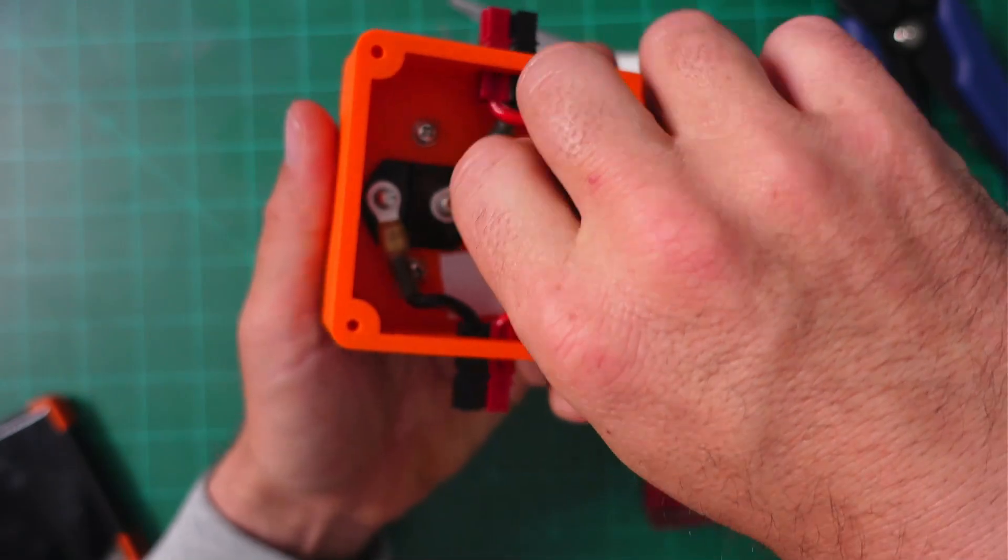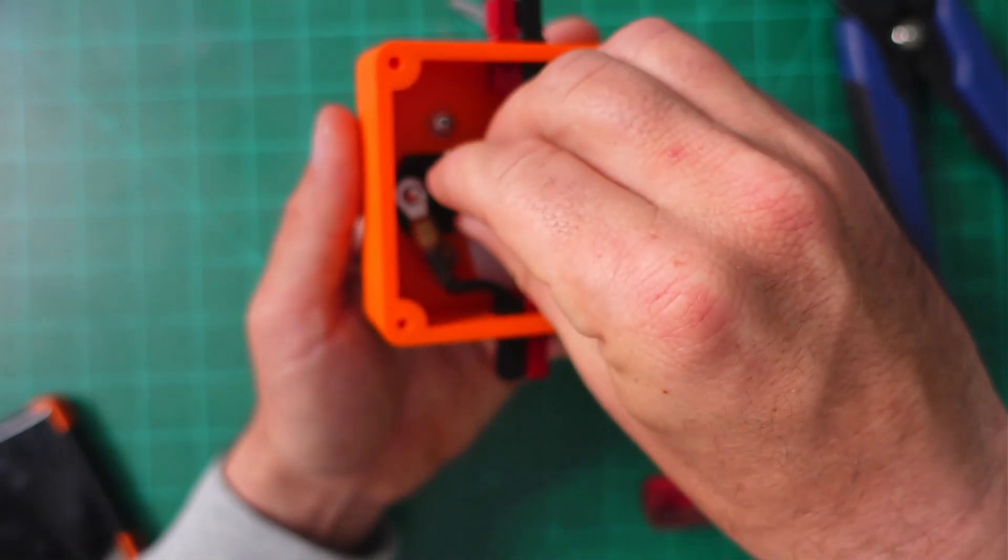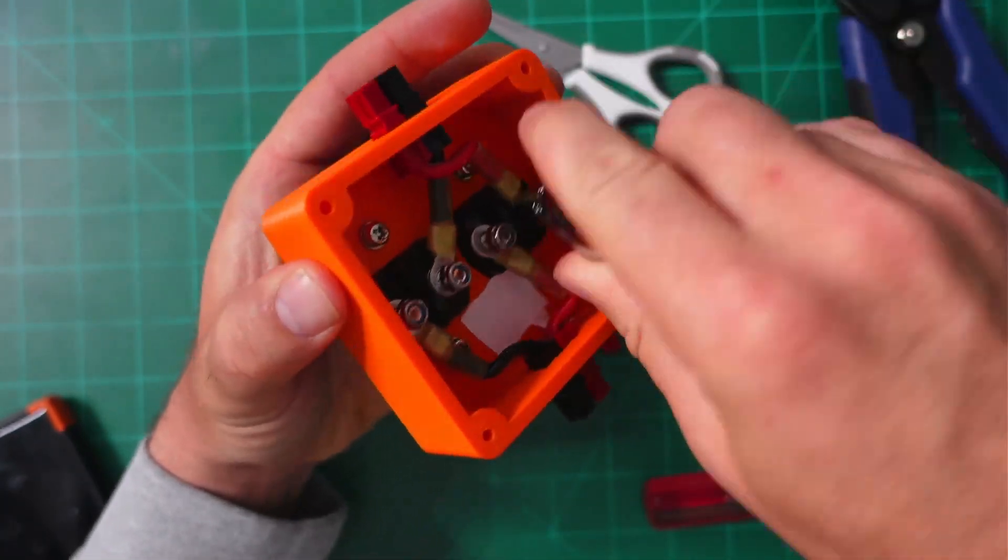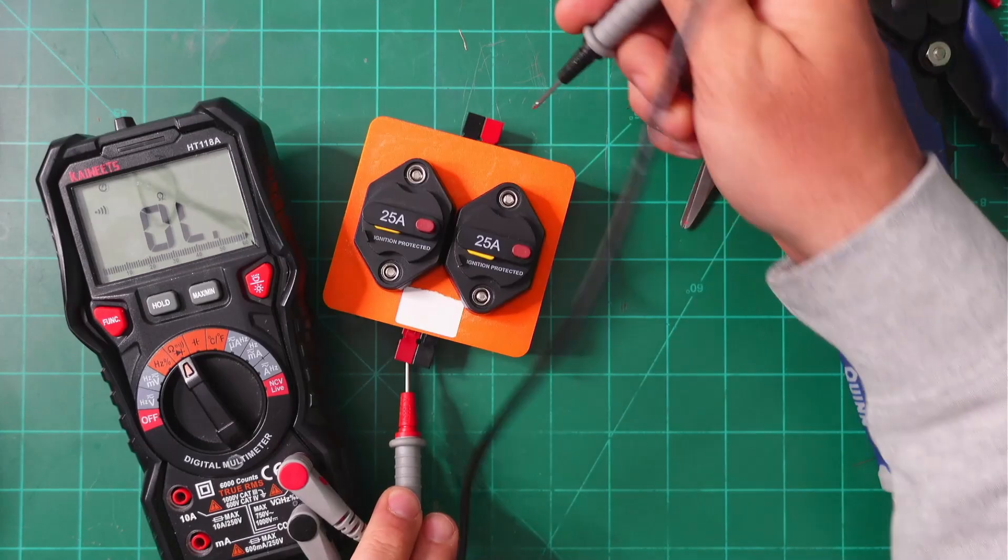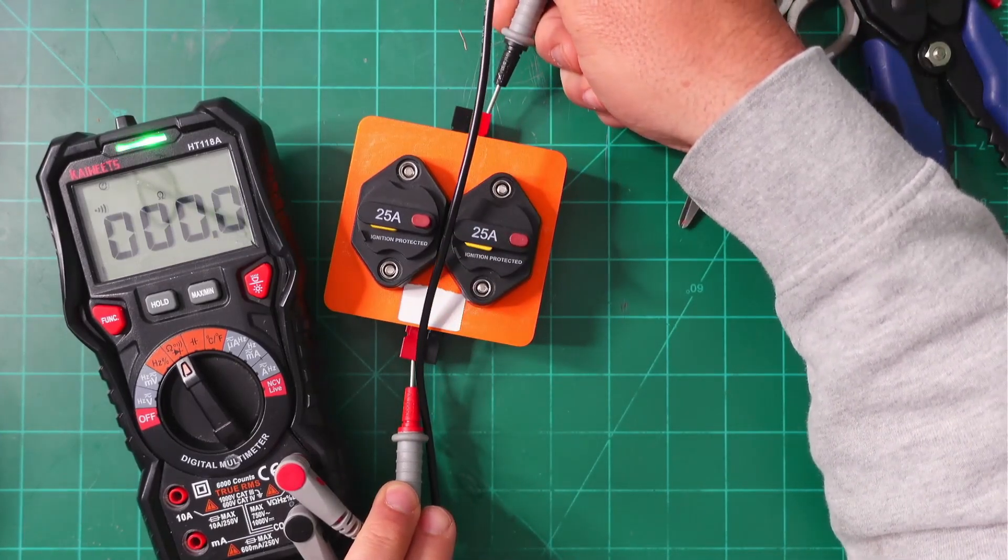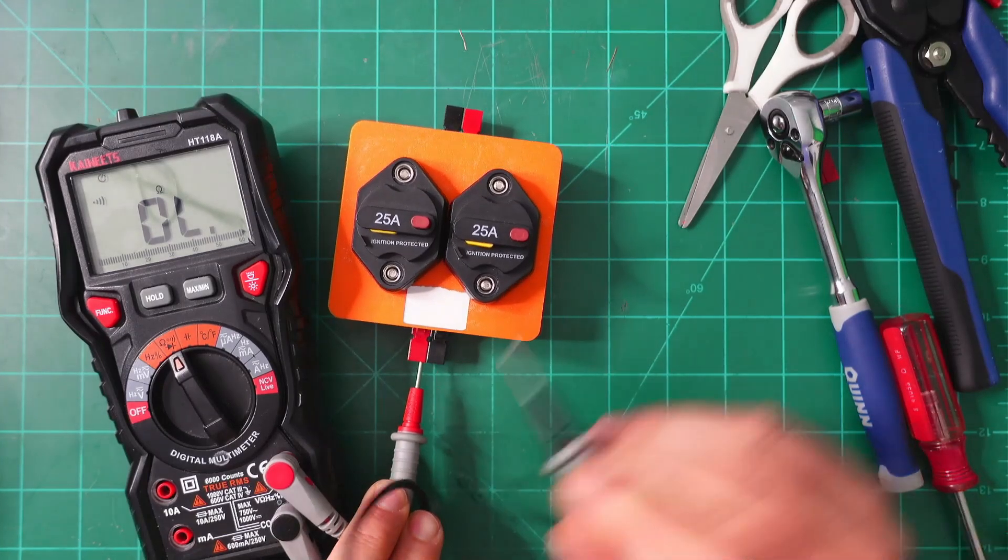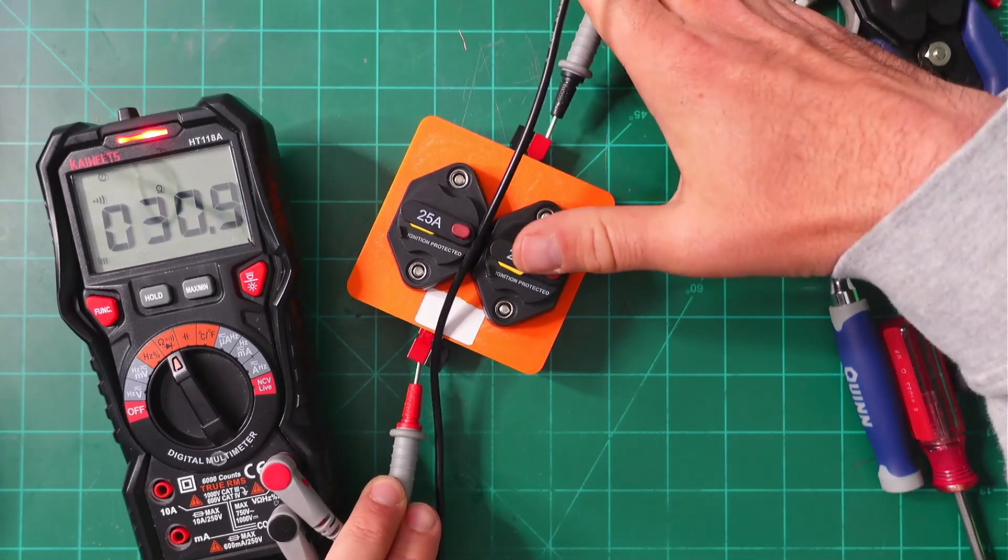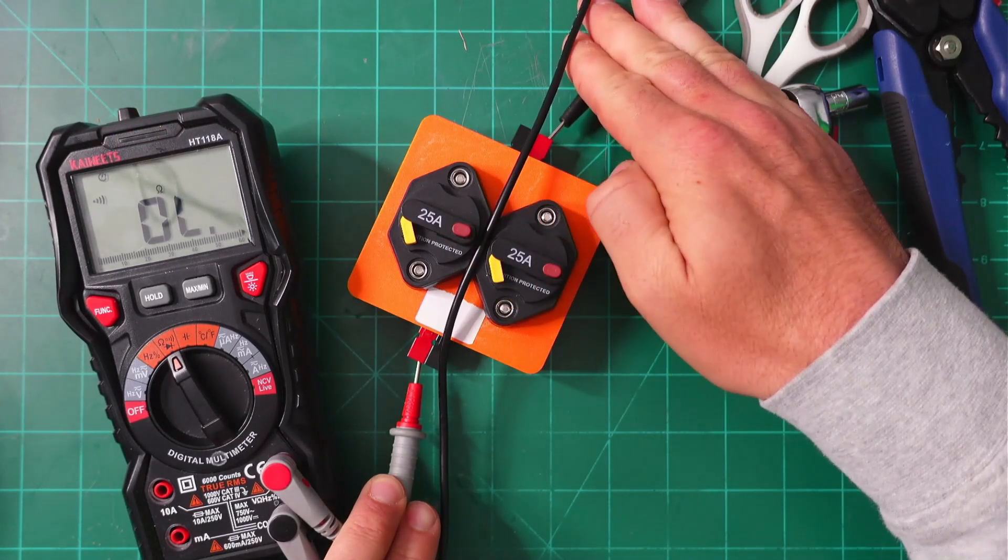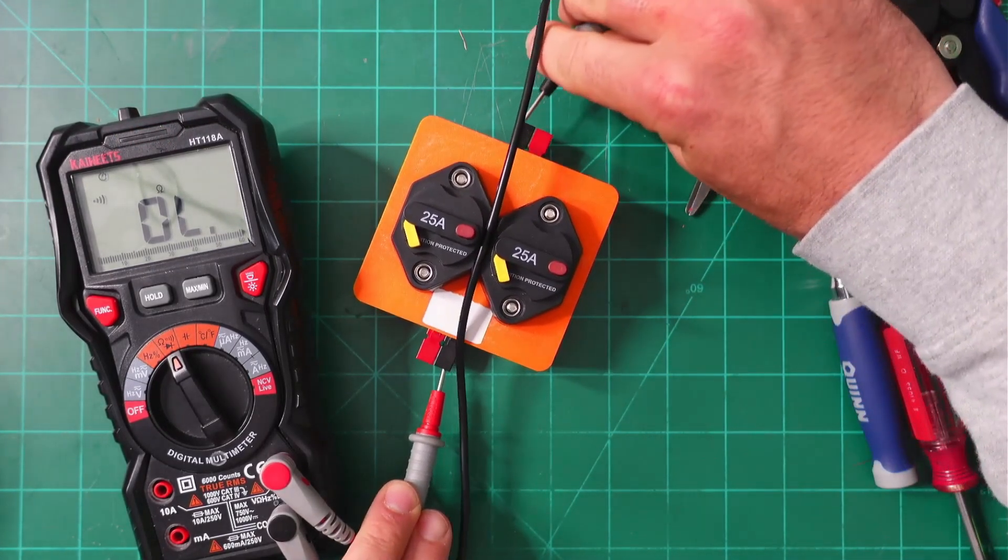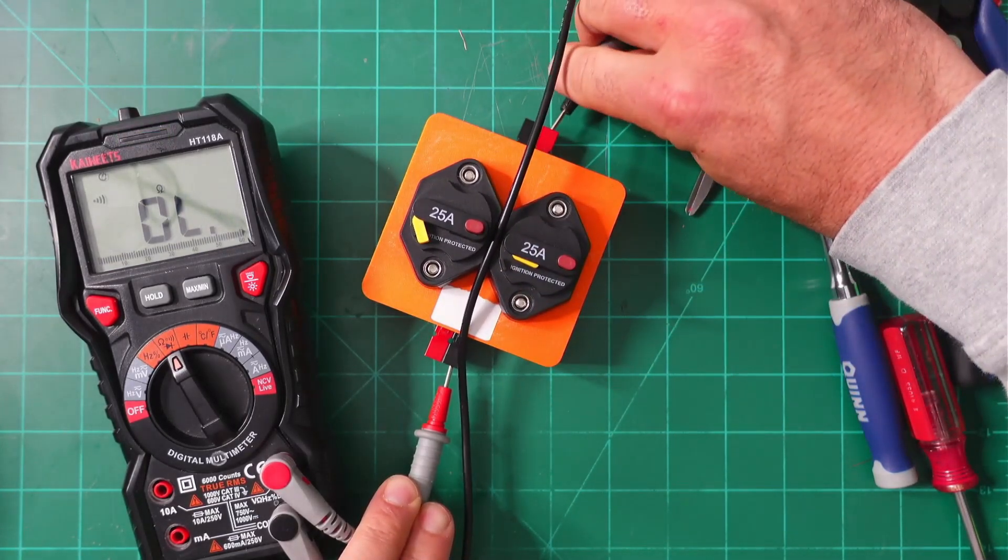Next, place each of the nuts on each of the posts and tighten them down, but don't over-tighten them. Next up we're going to check for continuity between all the different posts, and I'm doing this in a closed position first. I notice continuity between the positives but not positive to negative - that's a good thing. I don't want any shorts to occur. Then I'll trip both of these circuits so they're in an open position, and we see that I lose continuity. So the circuits are working. I'll test this on the negative side of things as well.